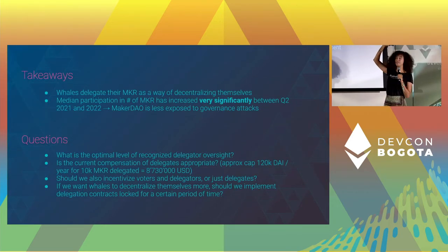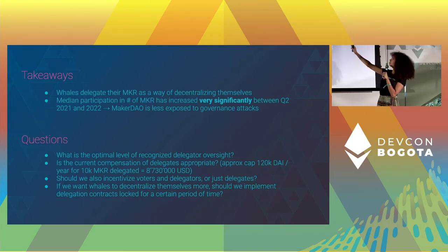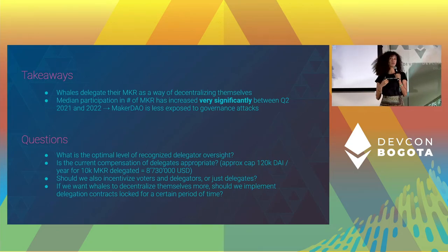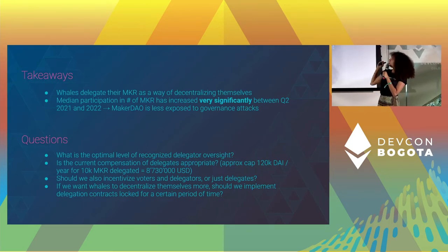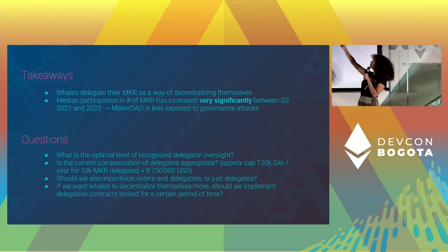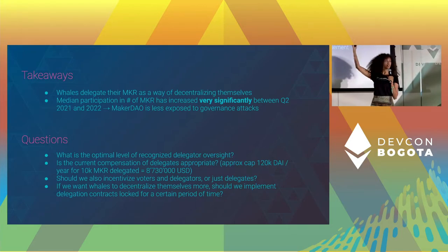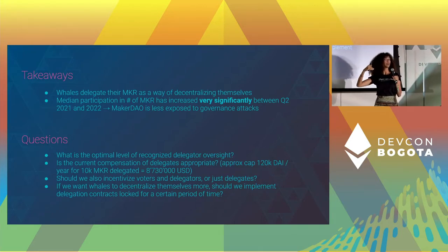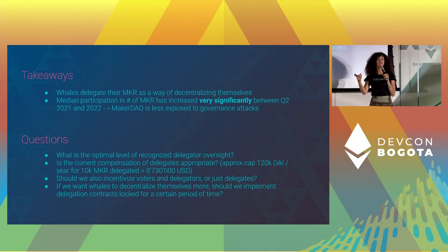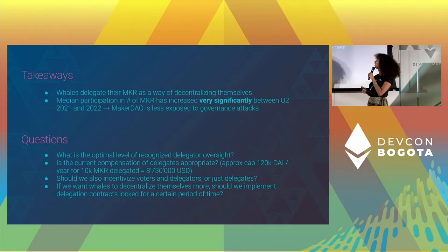So takeaways: whales delegate their MKR as a way to decentralize themselves, and we see a very significant increase in the number of Maker tokens that are used in votes.